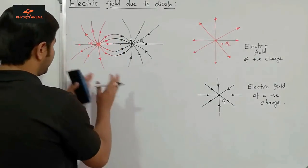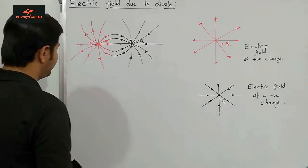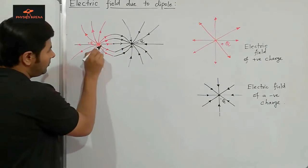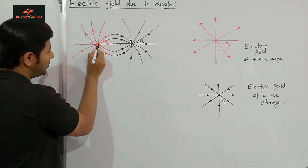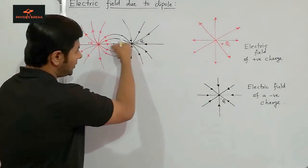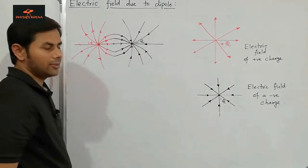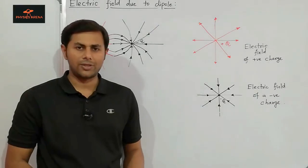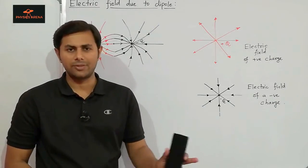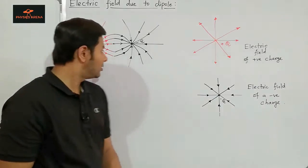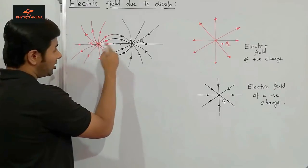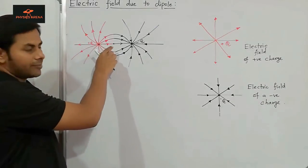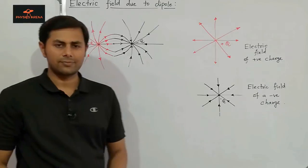Now let us try to justify this picture. Suppose we have a positive charge kept at this point — it will get repelled by the positive charge +q and it will get attracted by the negative charge -q. So it will move in this direction, and we know that the direction along which the positive test charge moves is the direction of the electric field. So along the line joining the two charges, the electric field will be directed from positive to negative.